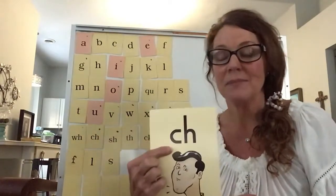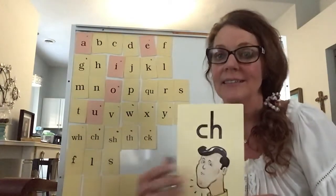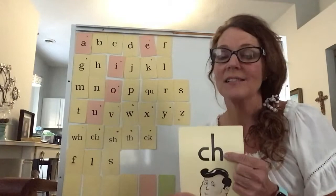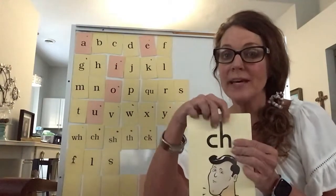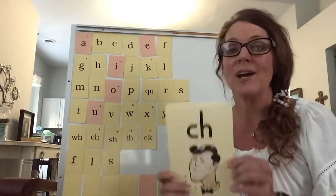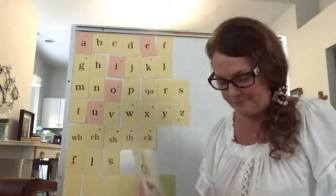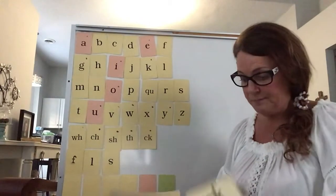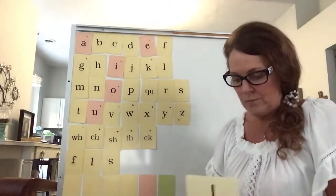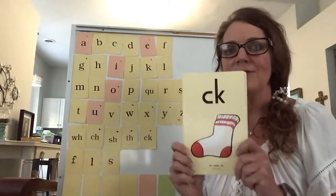Now we know that when C is by itself it says K and when H is by itself it says H. But when those two letters are side by side in a word they make the sound CH. So we call that a digraph. And there's five of them. Let's go use our word cards and review them.